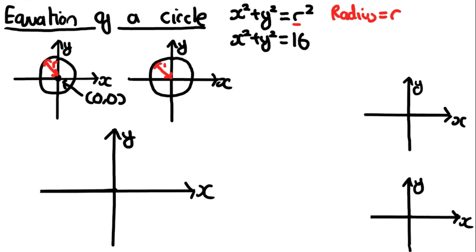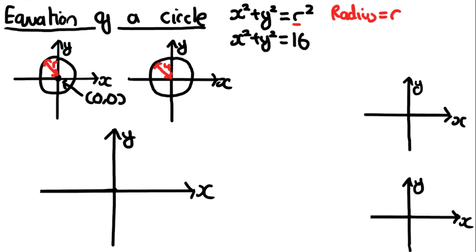The radius of this circle is going to be 4. That's quite straightforward — all you need to know is the radius, which dictates the size, and the center is at (0, 0) which makes it a lot easier. But what if the center is not at (0, 0)? What if it's not at the origin — what if it's at a different point?